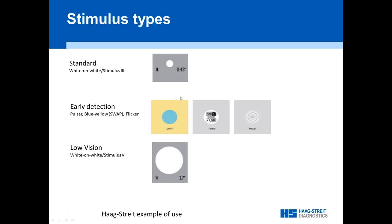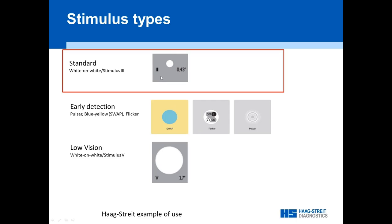Regarding stimulus types, the long-term standard is the classical Goldmann size III stimulus. We have a couple of early detection stimuli on the Octopus 900 — flicker, or blue-yellow on the Pulsar — developed with the hope to detect glaucoma much earlier. But looking at 15–20 years of research, that is not always the case, so they're only used in special situations. For low vision patients, Stimulus V is a nice option because it's much larger and reduces test-retest variability.